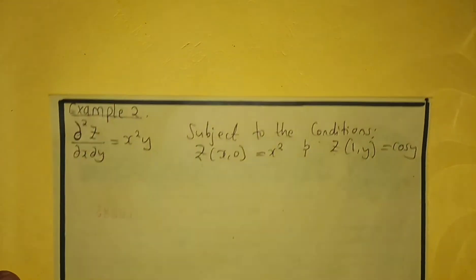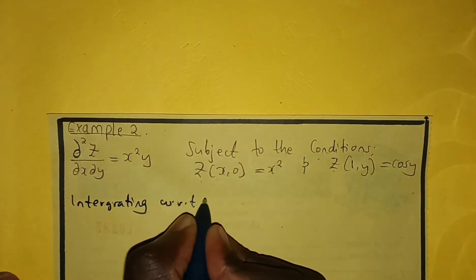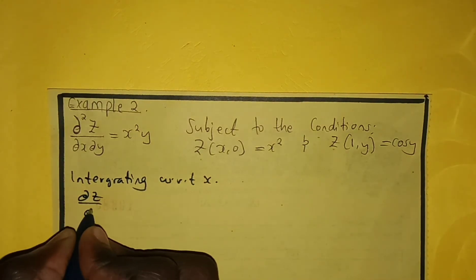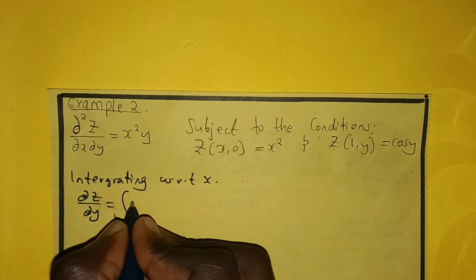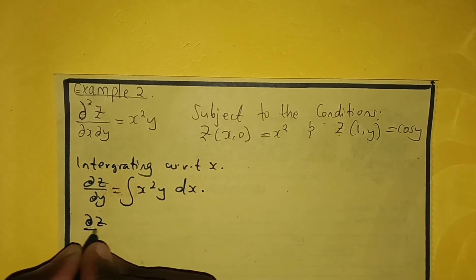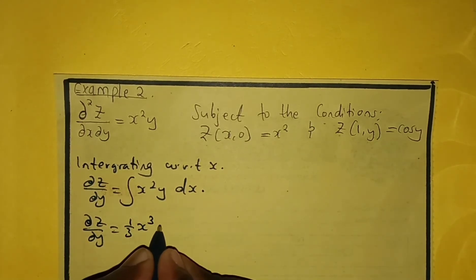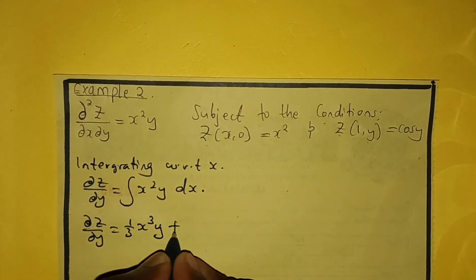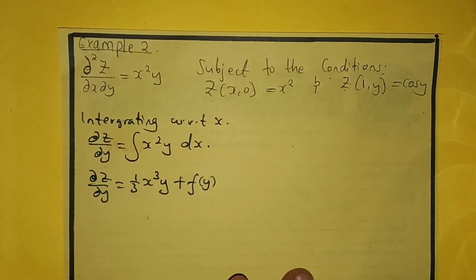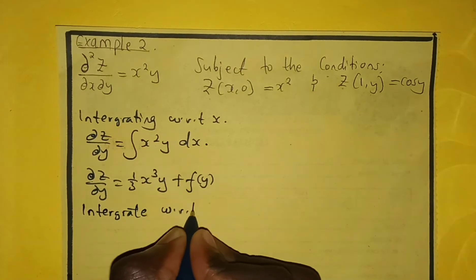Integrating with respect to x, we have ∂z/∂y = ∫x²y dx. So ∂z/∂y is equal to — when we integrate x² we get (1/3)x³ times y, then plus a function of y, because we are integrating partially with respect to x.